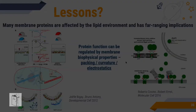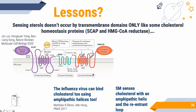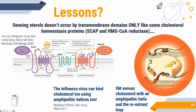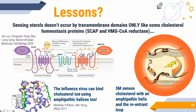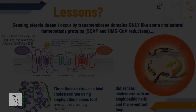It was generally taught that cholesterol homeostasis proteins like HMG-CoA reductase sense sterols via transmembrane domains, but we've shown it's not just transmembrane domains — loops and helices matter too. As a timely example, influenza viruses also bind cholesterol using amphipathic helices, and cholesterol plays an important role in viral infection. These unique loop and helix structures are also found in other well-known proteins like alpha-synuclein, caveolin, and lipid droplet proteins.